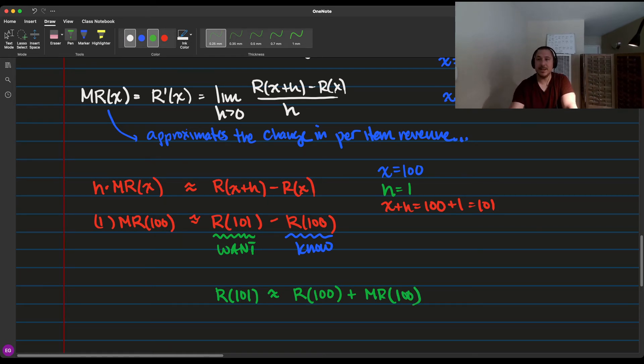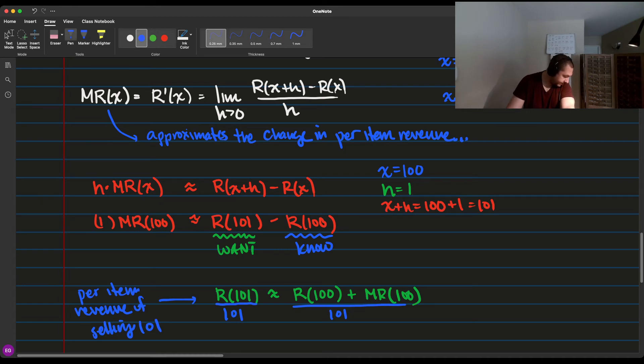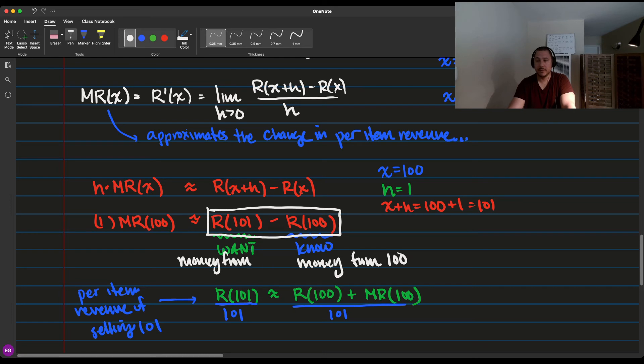Then what you can do is take this amount and divide it by 101, and this will give you the per item revenue of selling 101 items. Sometimes you'll be interested in figuring that out—what's the per item revenue of selling 101 items? Most of the time, you're actually going to want to know this. R(100) is the money made from selling 100.